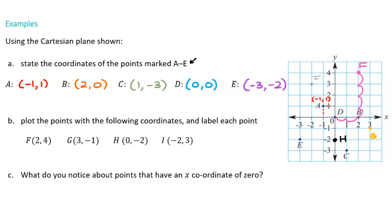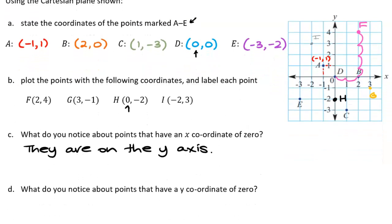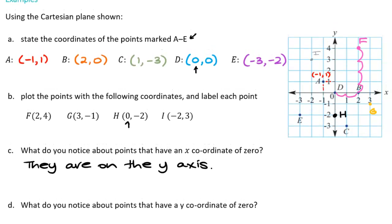The next question asks: what do you notice about points that have an x-coordinate of zero? Points D and H both have x-coordinates of zero, and they're both on the y-axis. Similarly, points with a y-coordinate of zero — points B and D — are both on the x-axis.